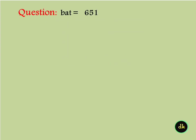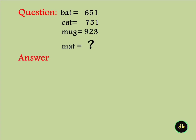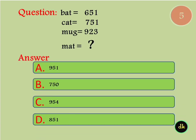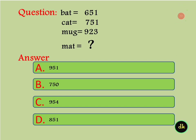BAT is equal to 651. CAT is equal to 751. MUG is equal to 923. What is MAT? Its value is 951.